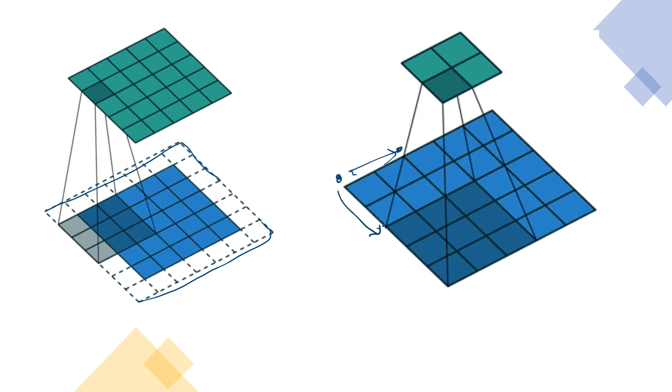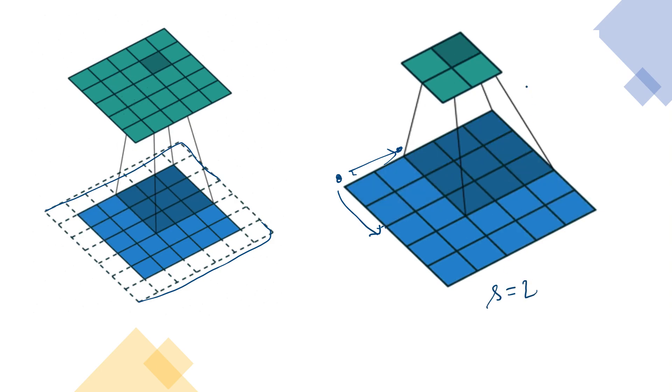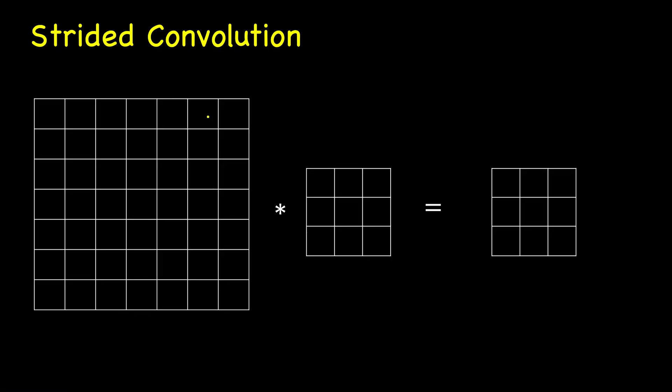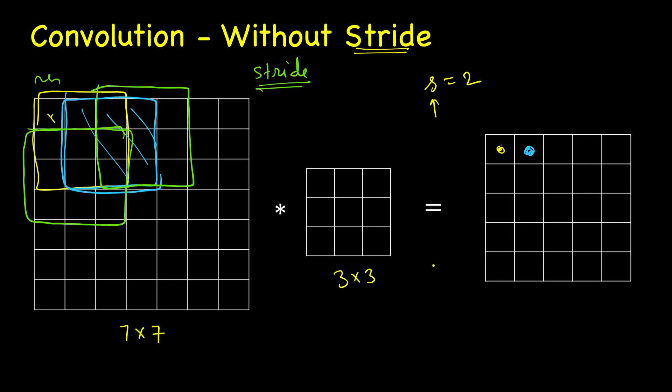But if you look at this one you see from here it directly jumps here. Similarly in vertical direction from here it directly jumps here. So here the stride is 2. Let's see what should be the output size. In this case, if this is n cross n the input and filter size is f cross f, then the output was n minus f plus 1.